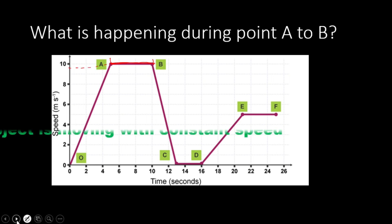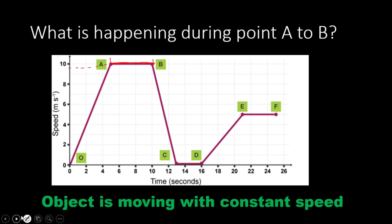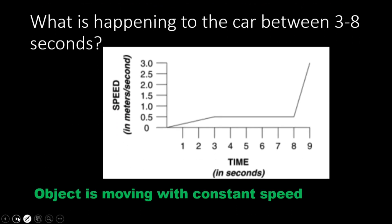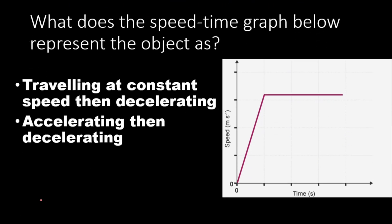The correct answer is the object is moving with constant speed. Next question: what is happening to the car between three and eight seconds? Between three and eight seconds, this is again a horizontal line parallel to the time axis, so the object is moving with constant speed.